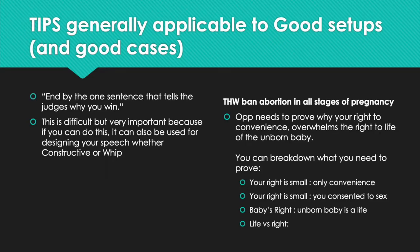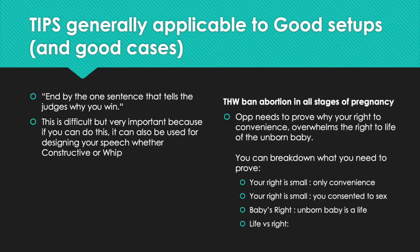This can also be used in terms of whip speeches. So, if you are a government whip, you can start off your whip speech by saying that opposition needs to prove why the lady's rights are more important than the baby's rights. That automatically brings your speeches into different subcategories or sub-reasons to support that sentence — like, my first point of the whip is going to be about how your right to a convenient life is small; second point, why we think that the baby's right is a large right that we have to care about; and thirdly, why, if you compare the baby's rights and the women's rights, the right to life should win.